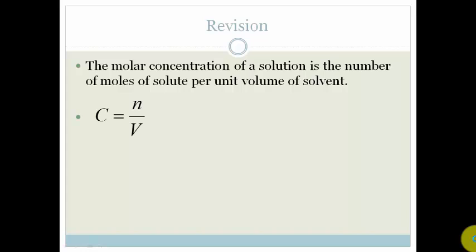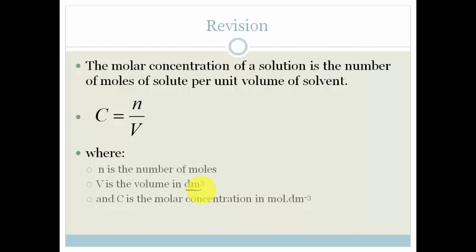So the equation goes: concentration is number of moles over volume. It is on your formula sheet where n is the number of moles, v is the volume, but please note it is in decimetres cubed. That is very important. Concentration therefore is going to be moles per decimetre cubed.